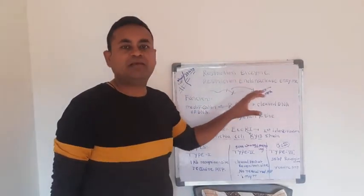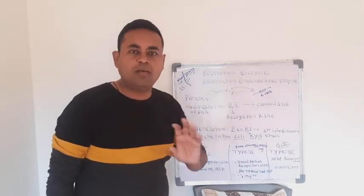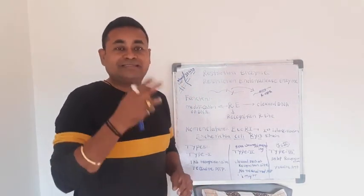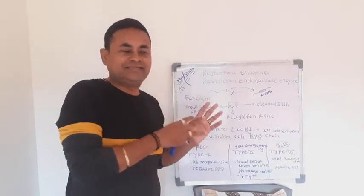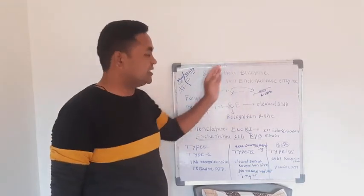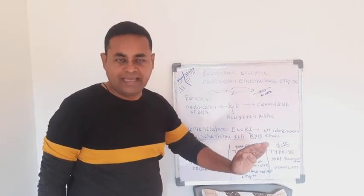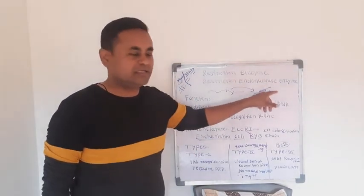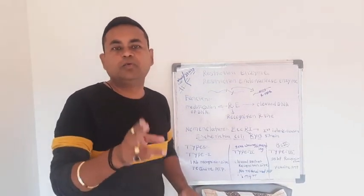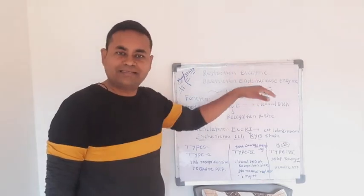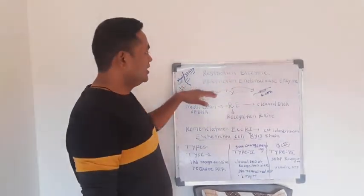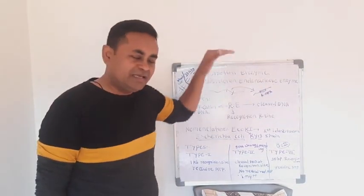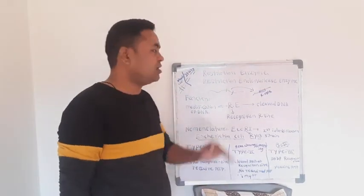First, we will see what are the functions of restriction enzymes. Mostly we know that restriction enzymes cut the genetic material — they cut the DNA. It cuts at the phosphodiester linkage. This is an endonuclease enzyme. Therefore, it is called the restriction endonuclease enzyme, because it cuts the phosphodiester linkage.